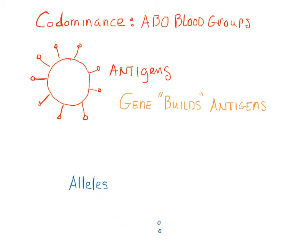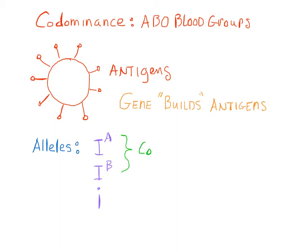Let's look at the different alleles, which are forms of a gene in humans that build these antigens. There are three alleles: one is called Ia, one is called Ib, and one is called little i. The Ia and Ib alleles are co-dominant — they both show an active role in the production of antigens — whereas the third allele, little i, is recessive to the other two.